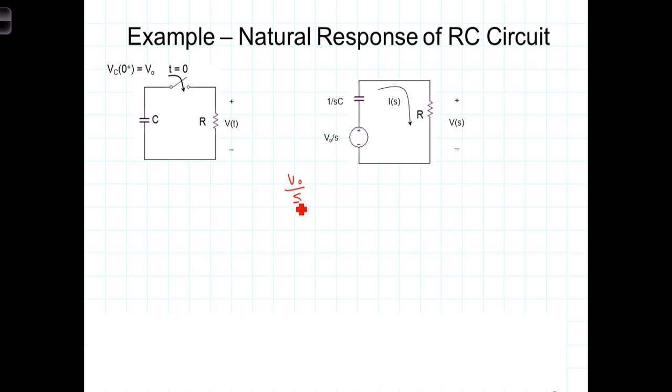V0 over S equals 1 over SC plus R times I. If we solve for I, we get that I equals V0 over S, and then dividing both sides by that gives us 1 over SC plus R here in the denominator.